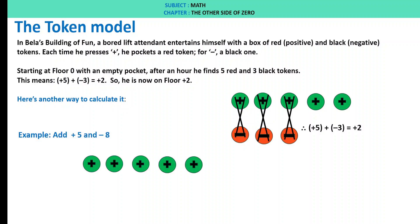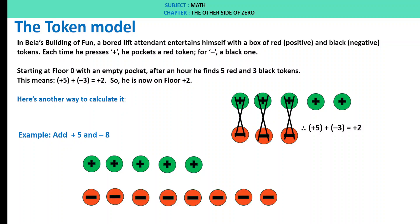Add plus 5 and minus 8. We have plus 5, then we take minus 8. We cancel out the pairs — that is plus 8 cancels — and the remaining tokens we are left with is minus 3. Therefore, plus 5 plus minus 8 is minus 3.